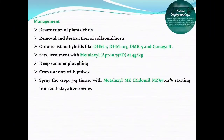For management of downy mildew, you must destruct the plant debris which serves as a reservoir for survival of this pathogen. Similarly, removal and destruction of collateral hosts is recommended. Growing resistant varieties like DHM1, DHM103, DMR5, and Ganga2 is advised. Seed treatment with Metalaxyl at 4g per kg can avoid primary infection to the seed and control downy mildew at the primary level.